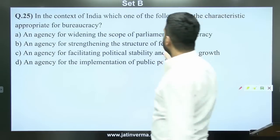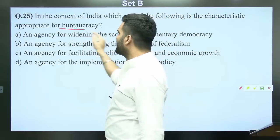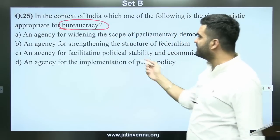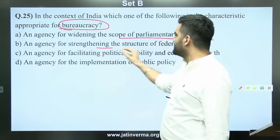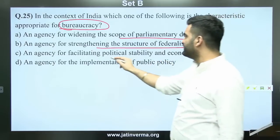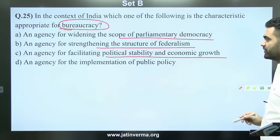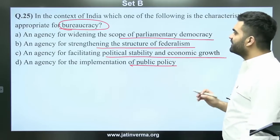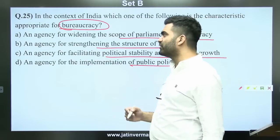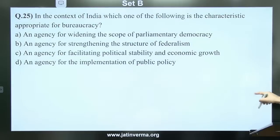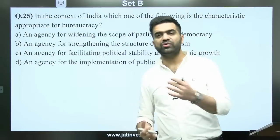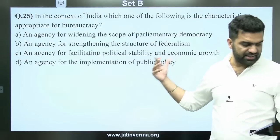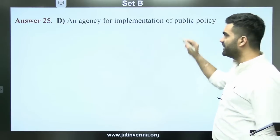What is the most appropriate characteristic of bureaucracy in India? Options include: agency for widening parliamentary democracy, agency for strengthening federalism, agency for facilitating political stability and economic growth, or agency for implementation of public policy. In a parliamentary democracy, political stability is important. There will be confusion in such questions. The official answer is D — for implementation of public policy.